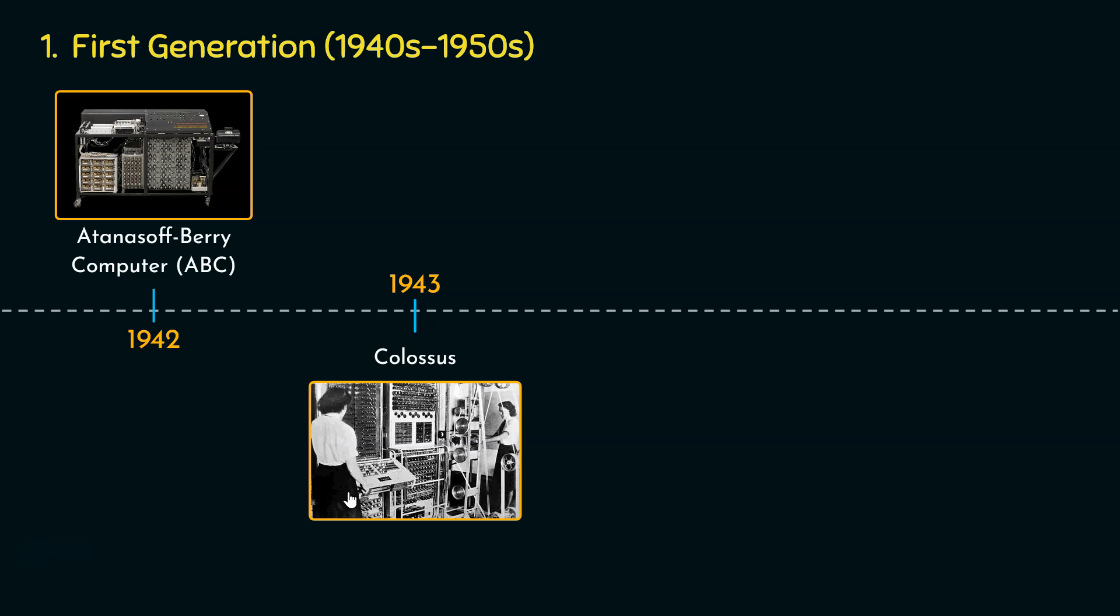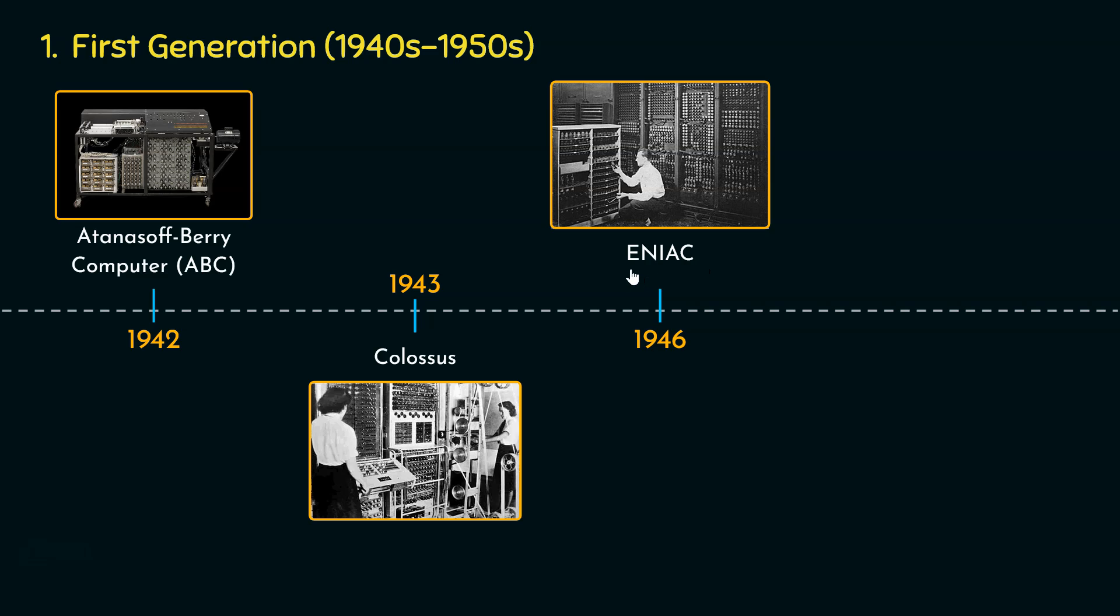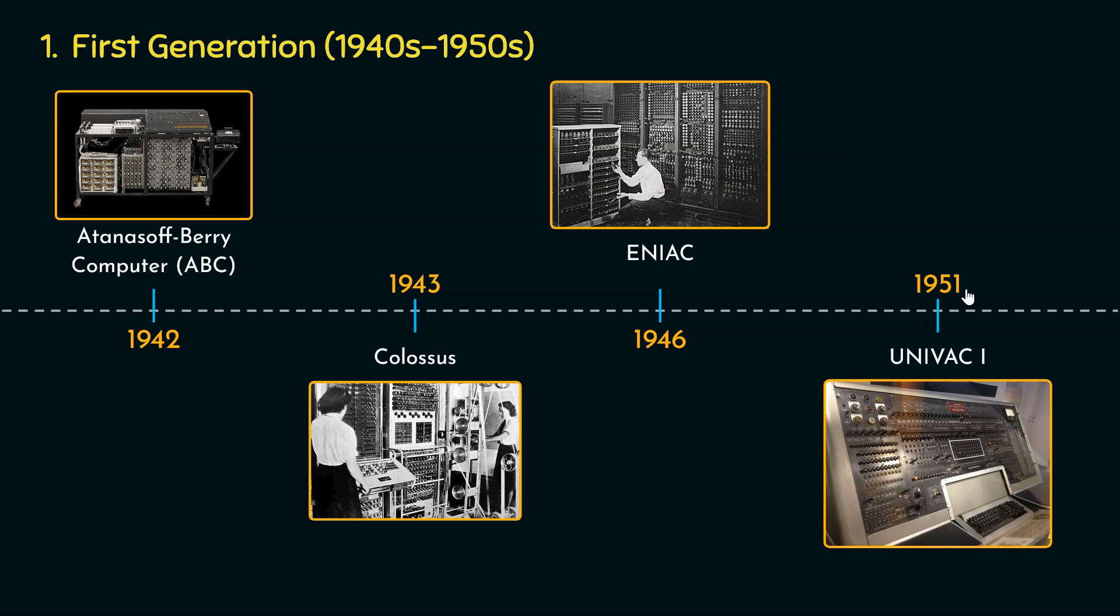Thereafter, taking the inspiration from John Vincent Atanasoff and financed by the United States Army, secretly the development of ENIAC, or the Electronic Numerical Integrator and Computer, began at University of Pennsylvania's Moore School of Engineering in 1943 under the codename Project PX. In 1946, after World War 2, its existence was made public. Thereafter, in 1951, the UNIVAC 1 mainframe computer became famous for predicting the outcome of the US presidential election in the following year.